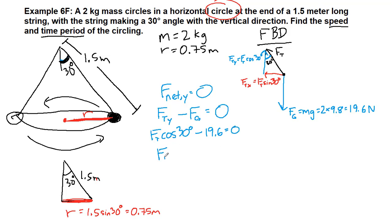Ft cosine 30 degrees equals 19.6. We added 19.6 to both sides. We divide both sides by cosine 30 degrees, so 19.6 divided by cosine 30 degrees gets us 22.6 newtons.